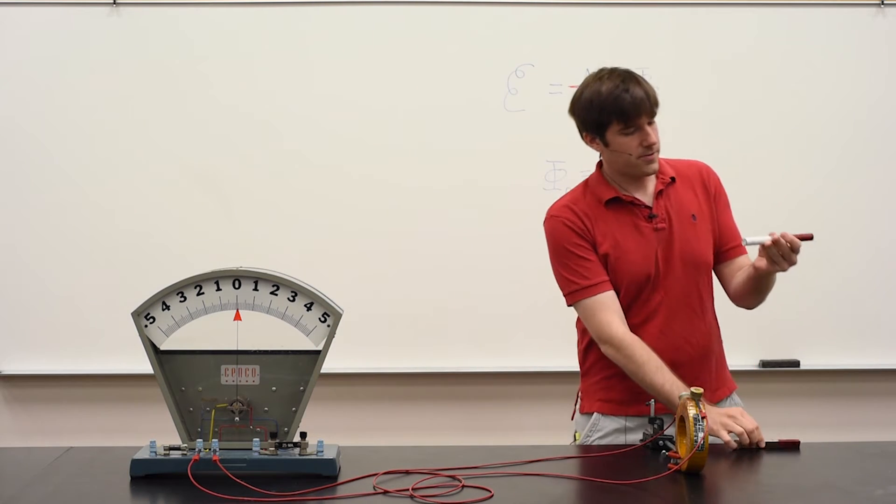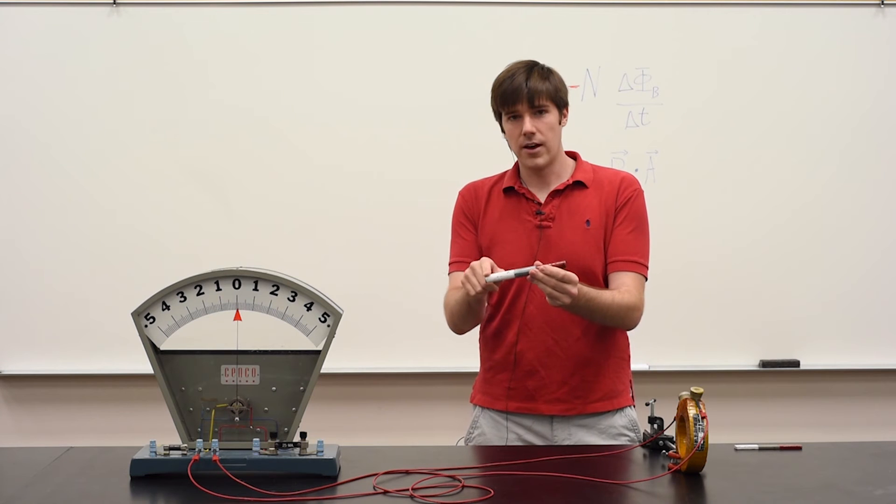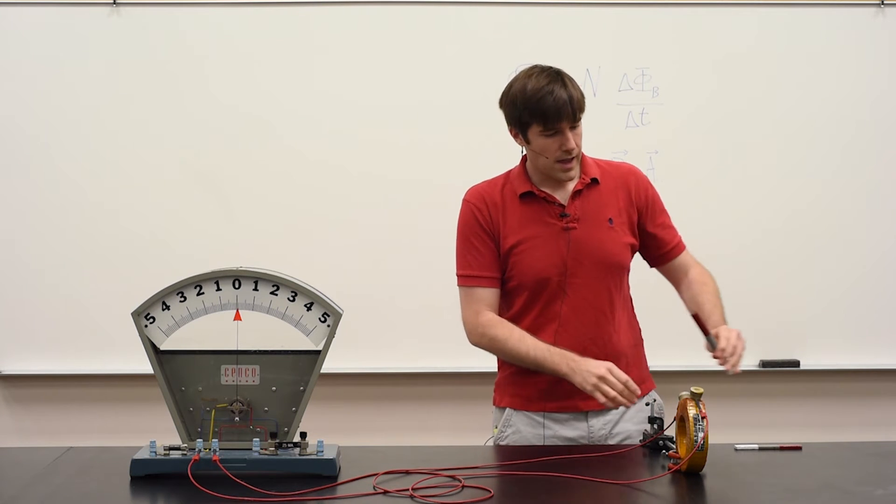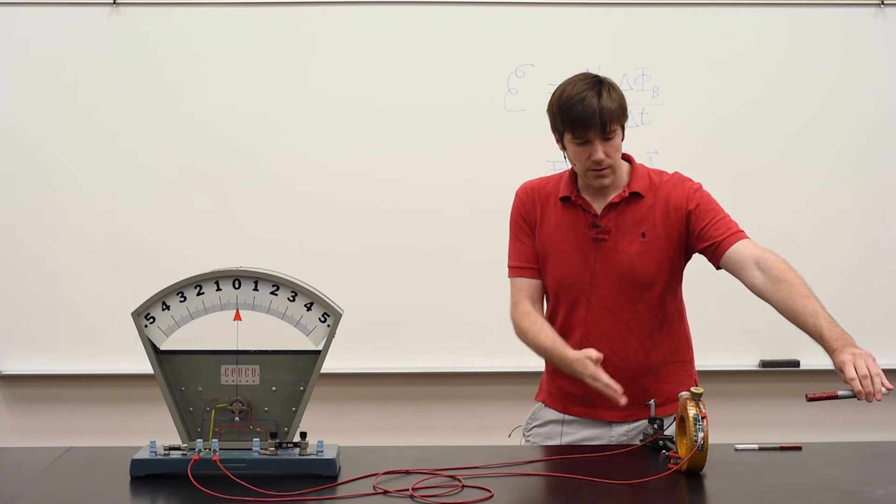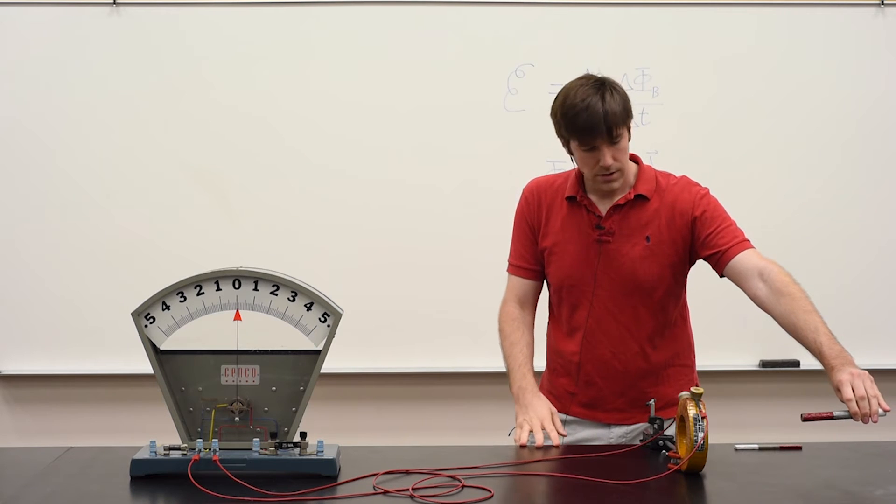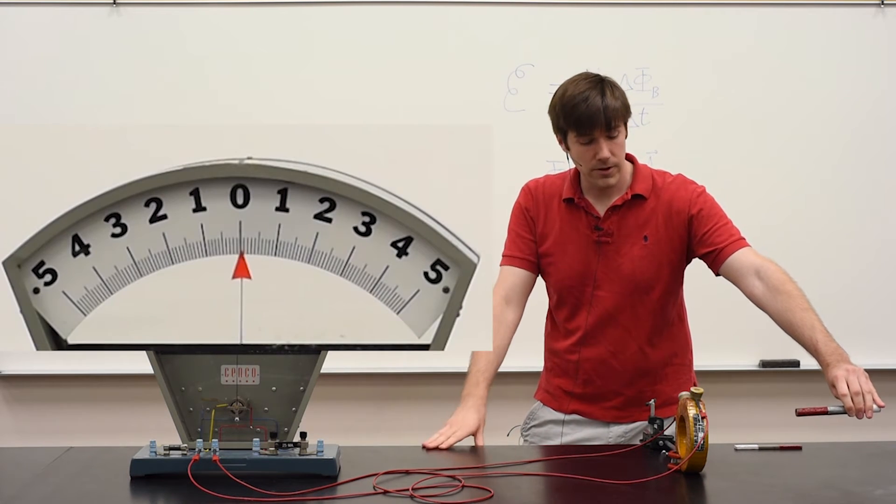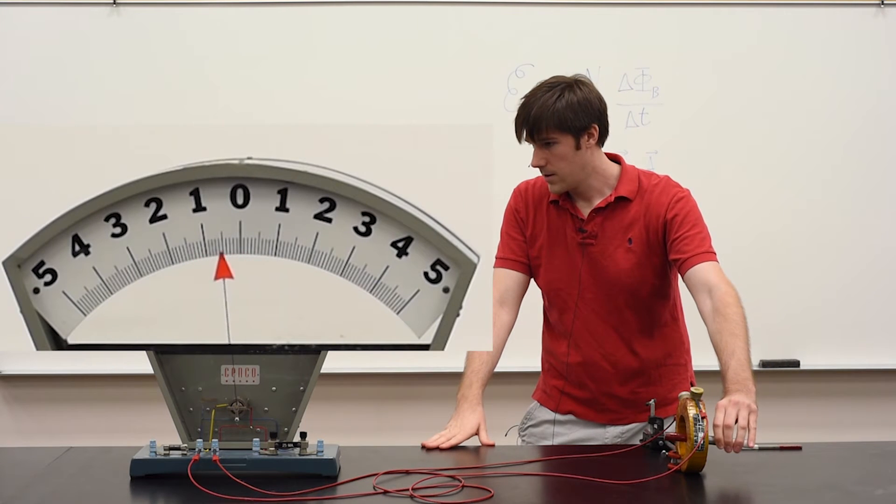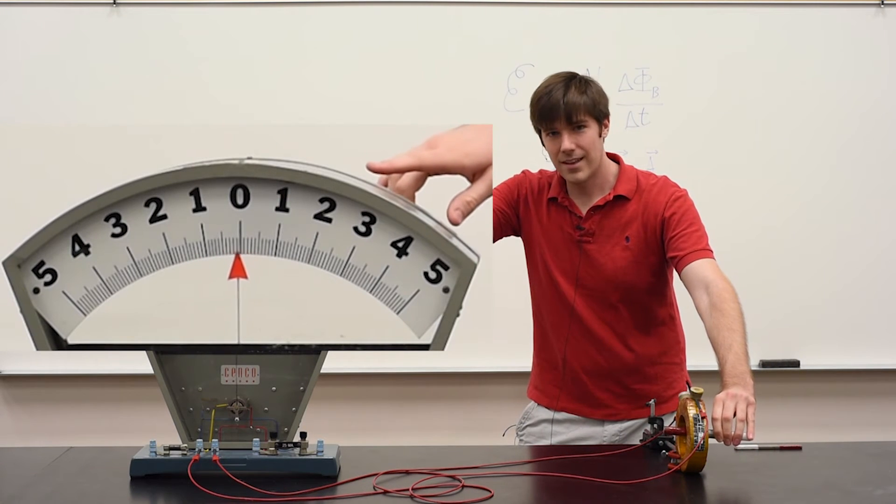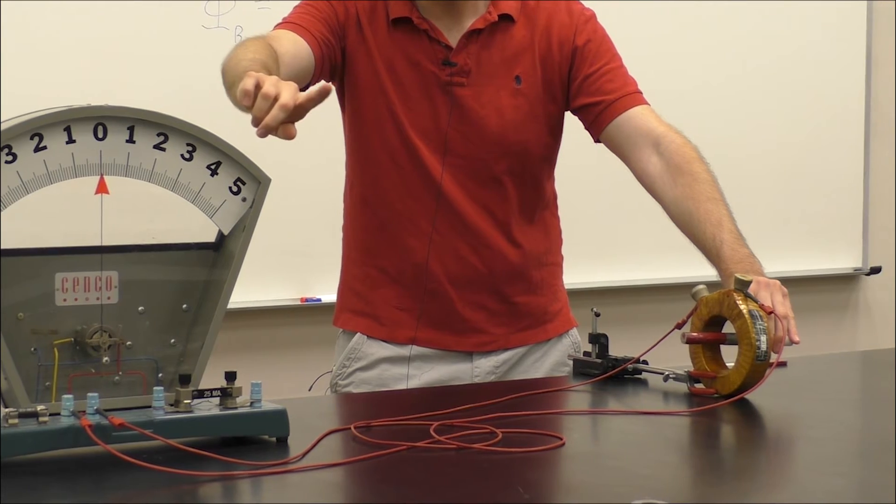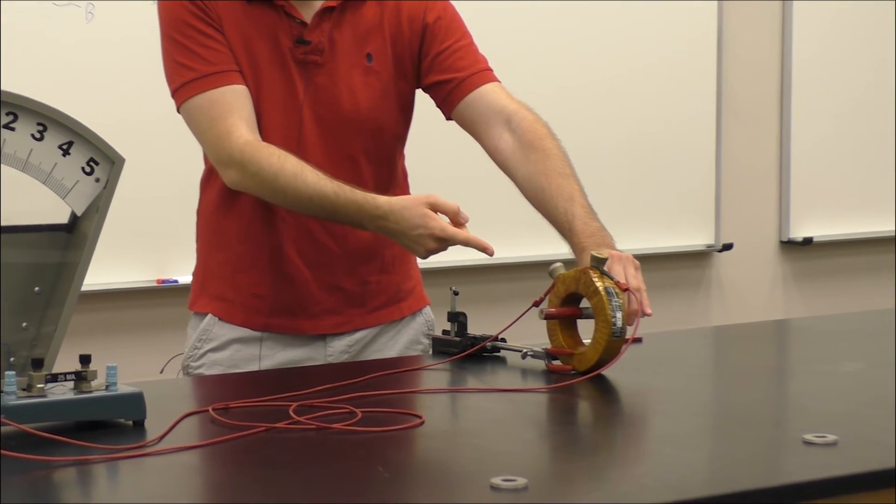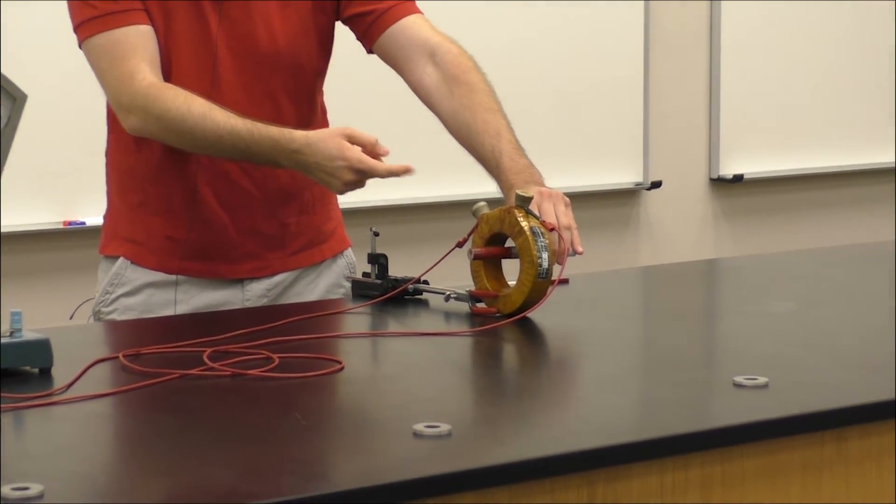Now, I have a bar magnet with north and south poles. When I move the bar magnet through the coils, you'll notice that on the galvanometer we'll read some sort of current. But the current doesn't stay that way too long because it quickly moves back to zero. That's because I'm no longer changing the magnetic field through the set of coils.